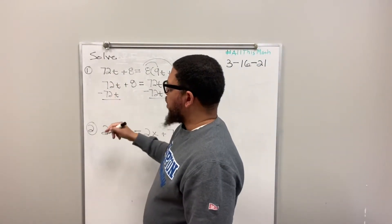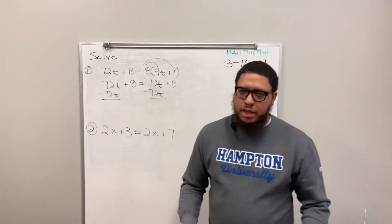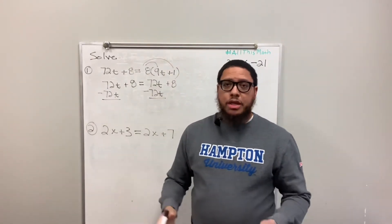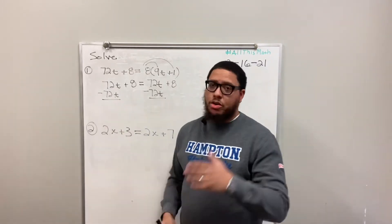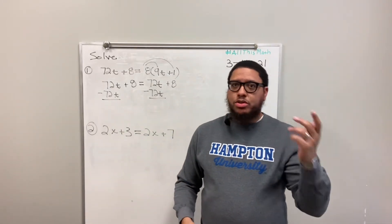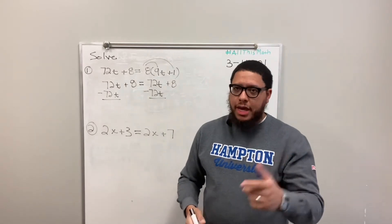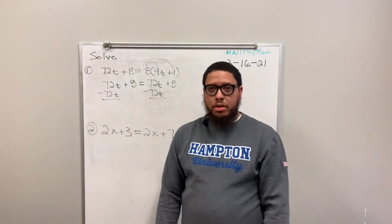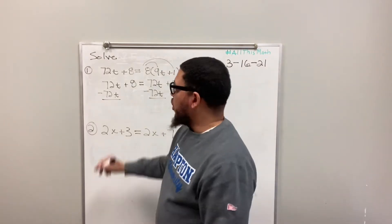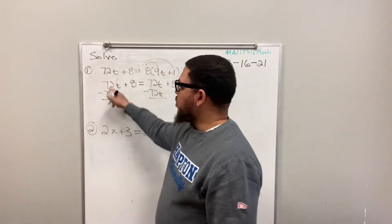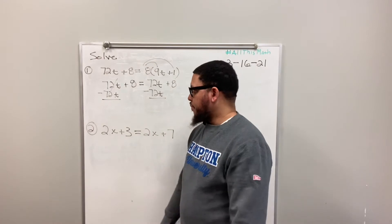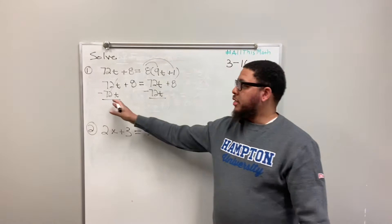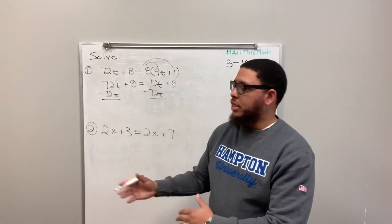Something interesting is going to happen. 72t minus 72t is not t, not 72, not 1 — it's 0. A lot of times when you sit in class and you know the answer but think it's too easy, it can't be that. It is that. 72t minus 72t is 0, they're gone. I don't need to write the 0 because nothing doesn't need to be represented in this scenario.